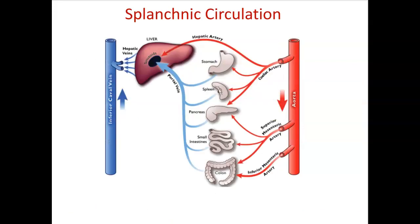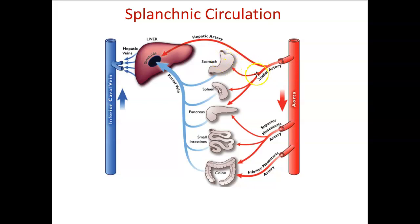We need to talk about blood vessels — specifically splanchnic circulation, which we'll look at in our next practical. Looking at the abdominal aorta, the very first branch is called the celiac trunk. The celiac trunk has three branches: the left gastric going to the stomach, the splenic going to the spleen, and the common hepatic artery. The common hepatic will then split into right and left hepatic arteries.